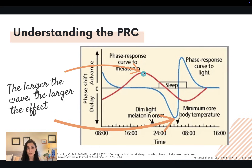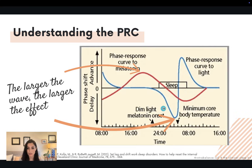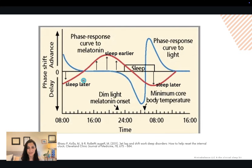The larger the amplitude of the wave, the more of an impact that intervention is going to have. Looking at this red line, you can see the wave is at a peak with the melatonin right about here. And look at these big waves here — that represents the size of the effect of light exposure at those times.